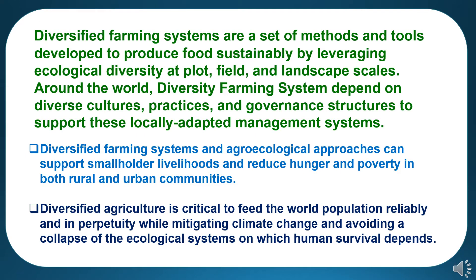Diversified farming systems are a set of methods and tools that are developed to produce food sustainably by leveraging ecological diversity at plot, field and landscape scales. Around the world, diversified farming systems depend on diverse cultures, practices and governance structures to support these locally adapted management systems.